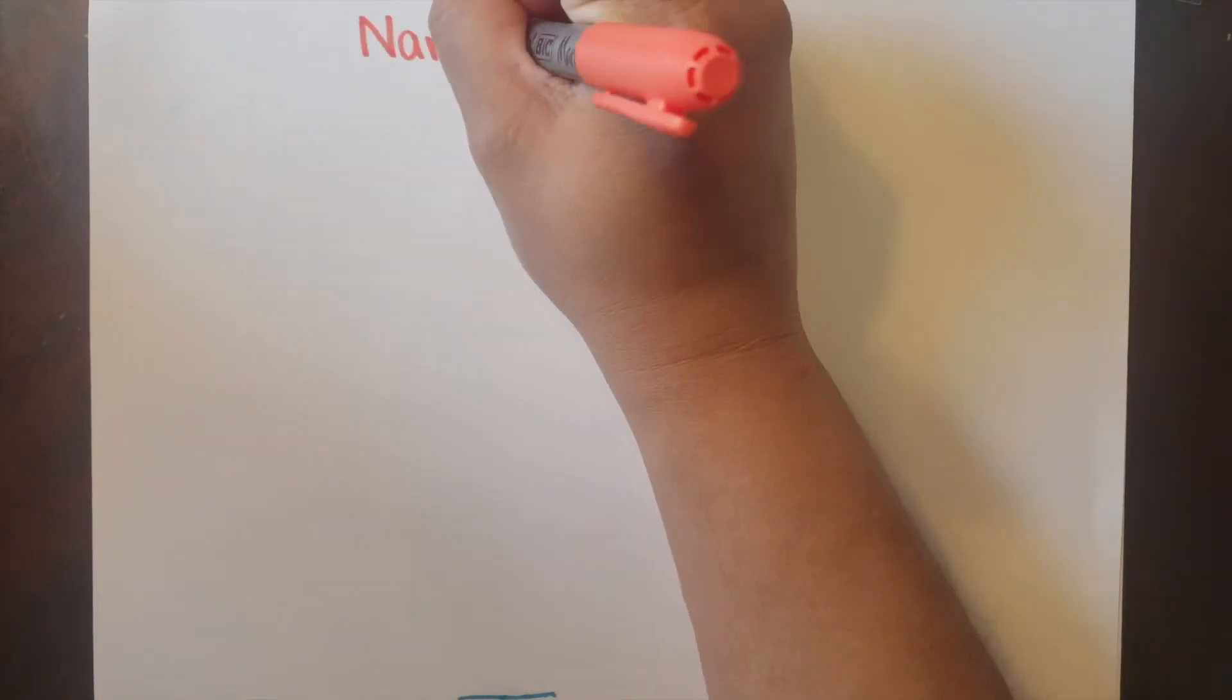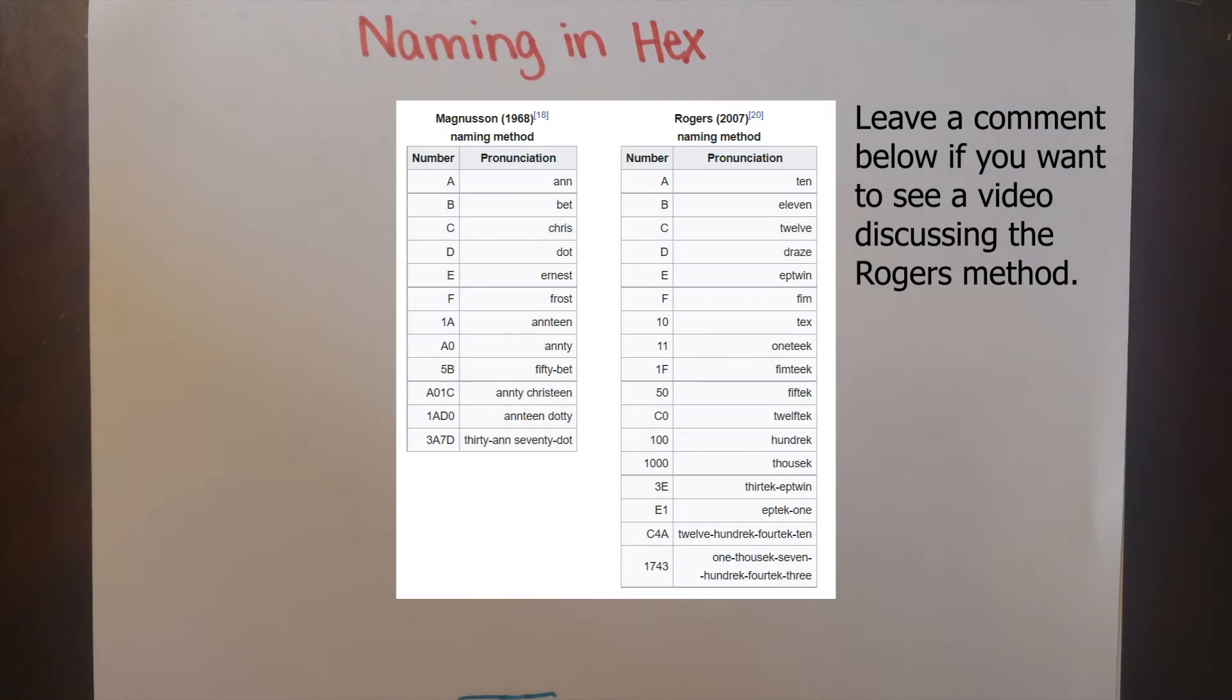This is a short video explaining naming numbers in hexadecimal. I will be using the Magnussen naming method for a variety of reasons. I think this one will be the easiest for most people to pick up.